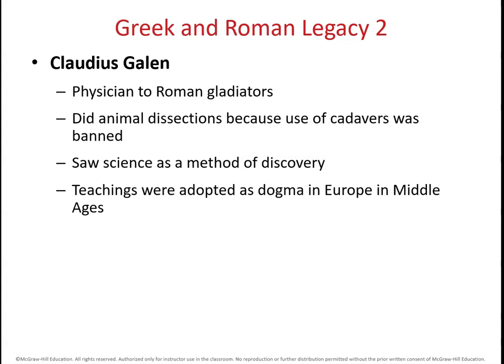Galen made a lot of assumptions about similarities between animals and humans, which led to some inaccurate information. But overall, he still made major contributions to our understanding of human anatomy. Galen himself stated his findings should be examined critically and not taken purely on faith. Unfortunately, this advice was not heeded, and his texts were used in an almost religious fashion for about 1,500 years — which, as we'll see, had some negative consequences.